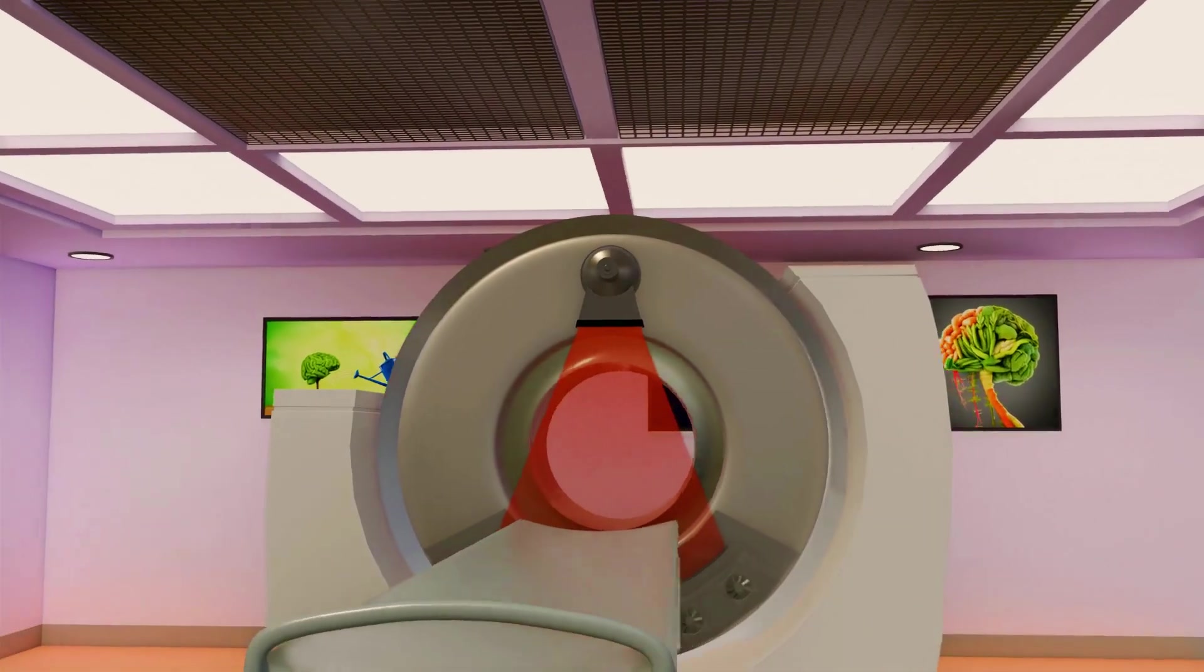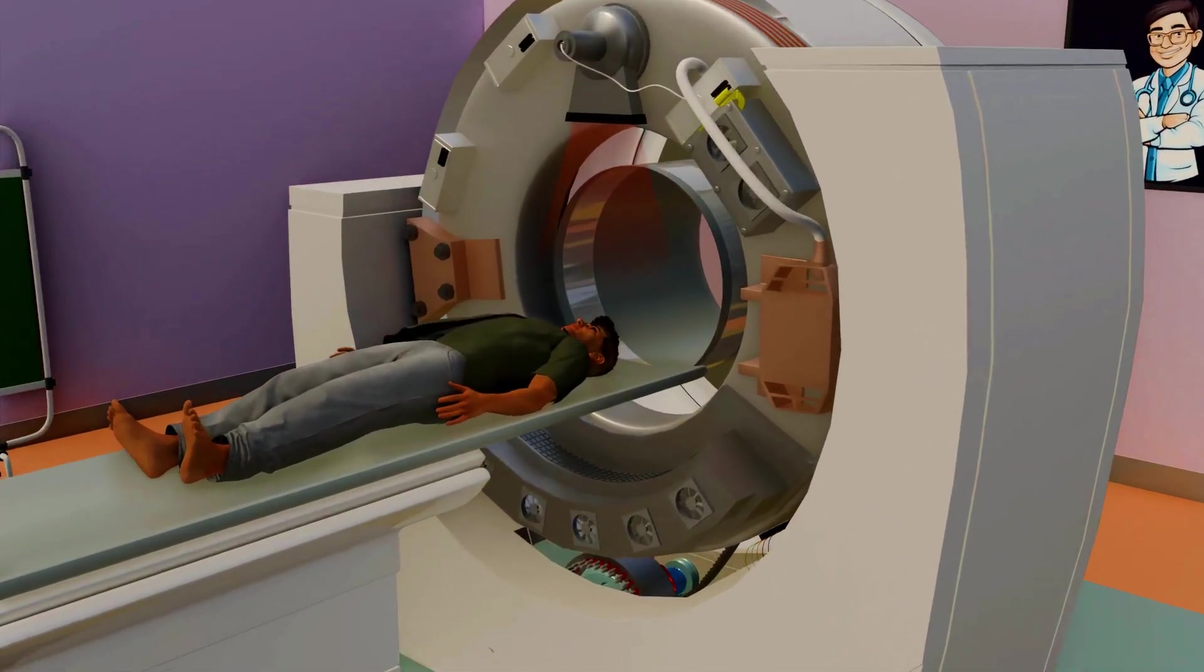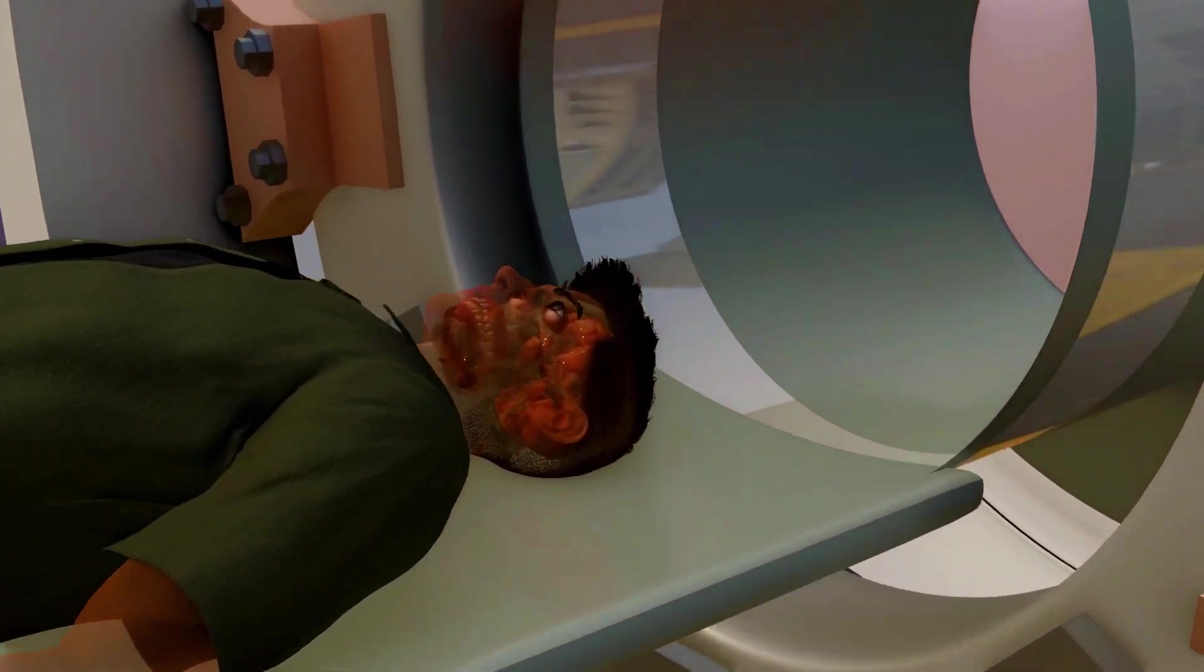Now, let's discuss the scanning process. For instance, if a patient has a blood clot in their head, the CT scan machine does not scan the entire head at once. Instead, it creates small slices of the head, ranging from 1 mm to 10 mm in thickness.